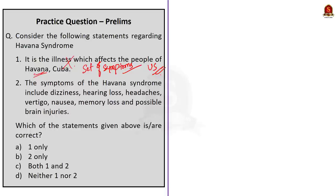Now, let us take up the second statement. The symptoms of Havana syndrome include dizziness, hearing loss, headaches, vertigo, nausea, memory loss and possible brain injuries. This statement is correct. This also we saw in our discussion and also we saw the doubtful cause of the syndrome to be accidental or intentional exposure to toxic chemicals, pesticides or drugs and also mechanical device that emits ultrasonic or microwave energy. Since here statement 1 is incorrect and statement 2 is correct, the correct option here is option B, 2 only.